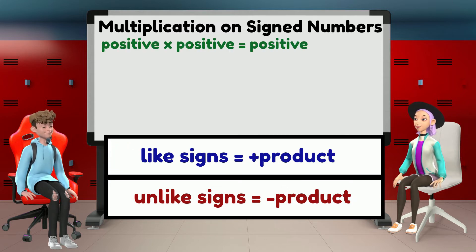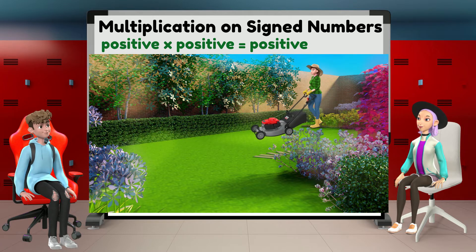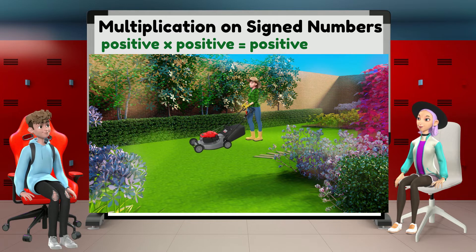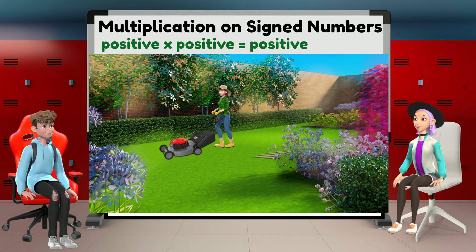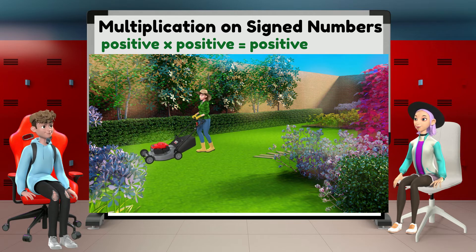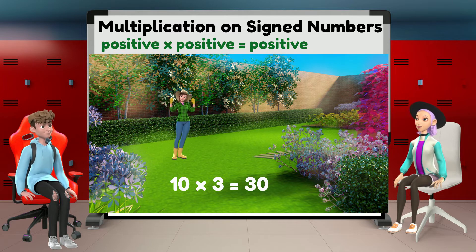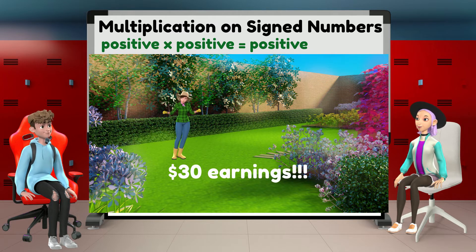Multiplying two positive numbers. As a sample case scenario, let's say my sister earns $50 for every big lawn she mows. If she mowed three big lawns today, how much did she earn? We are given $10 for every lawn and there are three lawns. We simply multiply 10 by 3. 10 times 3 equals 30. My sister now has $30 total earnings.